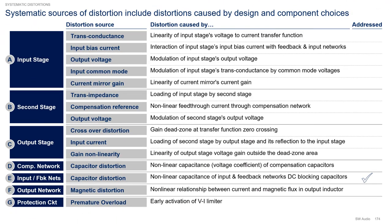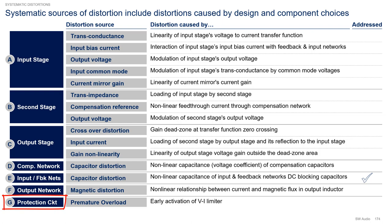Now let's turn our attention to the compensation, input and feedback networks, the output network, and the protection circuit. For the compensation, input and feedback networks, the main source of distortion is capacitor distortion due to non-linear capacitance, mainly stemming from the voltage coefficient of low-grade capacitors. In the input network, we address this by emphasizing the use of film capacitors over electrolytes. For the output network, magnetic distortion is caused by the non-linear relationship between current and magnetic flux in the output inductor. Finally, the protection circuit — the VI limiting circuit — may cause premature output overload due to its early activation. Many DIYers believe it is better to not have a protection circuit, but this is a bad idea, since accidentally shorting the amplifier output to ground may ruin your amplifier.